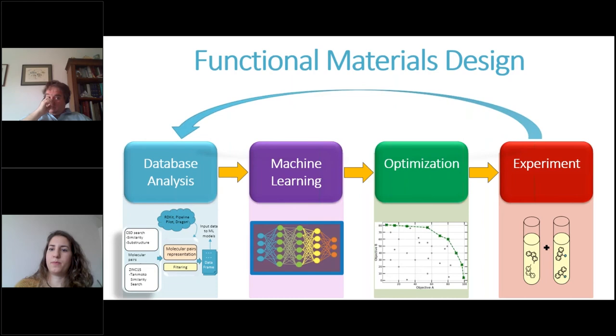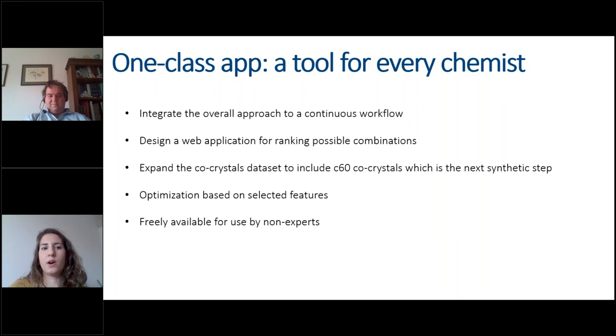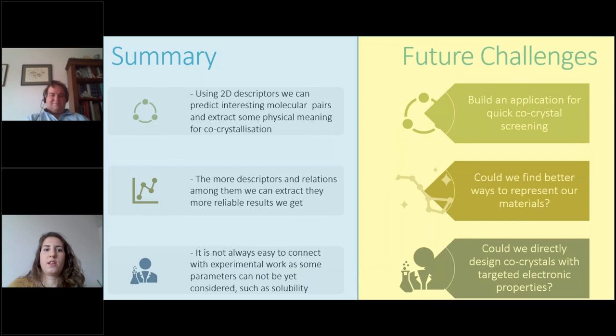This was the whole process. And of course, the idea is to give feedback to the database and close the loop and work all the same components to work synergistically. And for now, we want to try and put all this process to an application so that it will be free and any chemist can use it. We want to integrate it in a continuous workflow and then try to extend our data set, including C60 co-crystals, or try to optimize based on other electronic consideration as well. And then to make an app that any chemist can go and screen and see what kind of combinations are suggested based on this workflow.